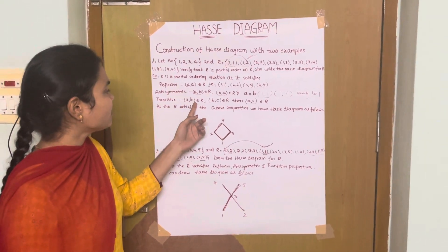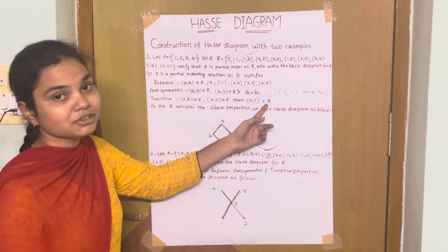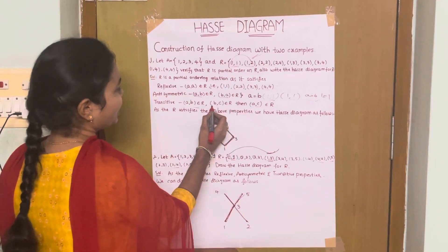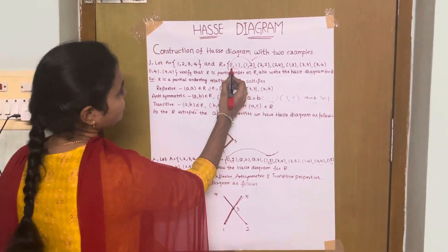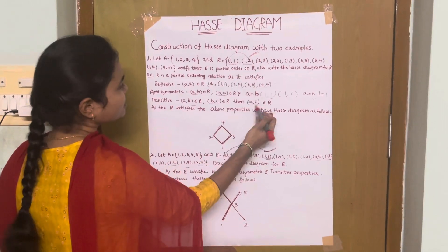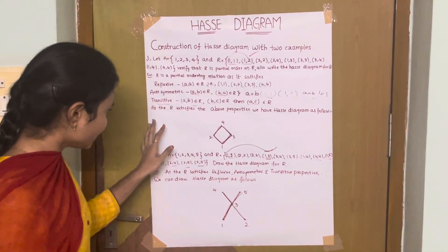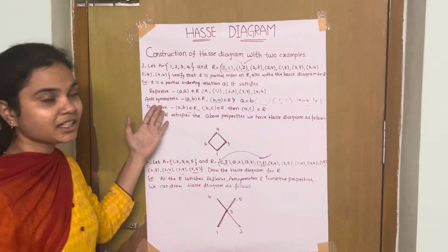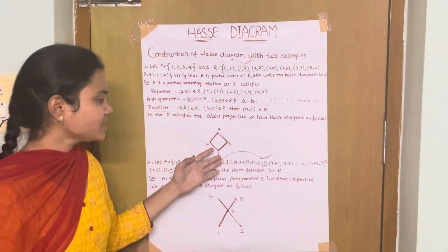Transitive means if (A, B) belongs to R and (B, C) belongs to R, then (A, C) belongs to R. Consider (A, B) as (1,1) and (B, C) as (1,2). Then (A, C) is (1,2). Since (1,2) is also in the relation R, it satisfies the transitive property. As the above properties — reflexive, antisymmetric, and transitive — are satisfied, we can draw the Hasse Diagram as follows.